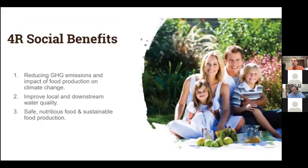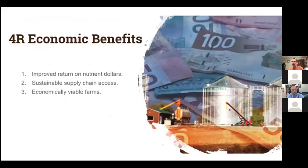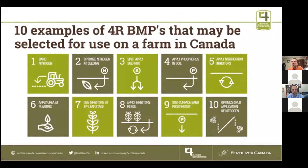The social benefits derive from both the environmental and the economic, and they include less impact of food production on climate change, better water quality, and safe, nutritious, and abundant food. Economically, 4R practices improve the return on the fertilizer dollar, help ensure supply chain access by meeting sustainability requirements, and result in economically viable farms.